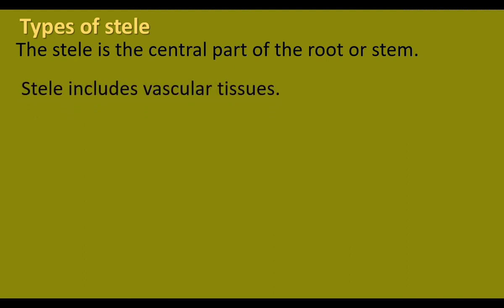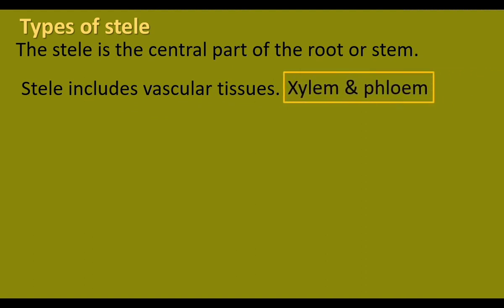The stele is the central part of root or stem. It includes vascular tissues — xylem and phloem. The outer part of the vascular tissues is covered by pericycle. At the center, pith is present. So, stele constitutes xylem, phloem, pericycle, and pith. Pericycle forms the outer part of the stele; pith forms the central part.